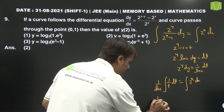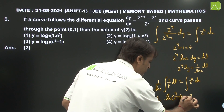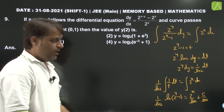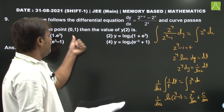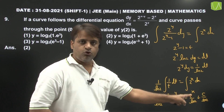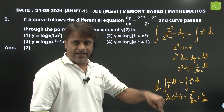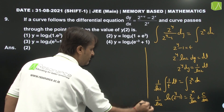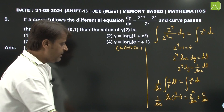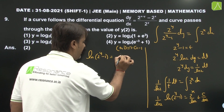Integrating both sides: (1 upon log 2) times log t, replacing t with 2^y minus 1, equals 2^x divided by ln 2 plus constant c upon log 2. Since log 2 is a constant, simplifying: log(2^y minus 1) equals 2^x plus c. Applying initial condition (0,1): y equals 1, x equals 0 gives log(2 minus 1) equals 1 plus c, so 0 equals 1 plus c, giving c equals minus 1.